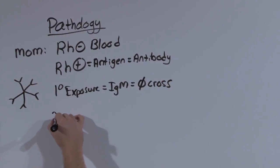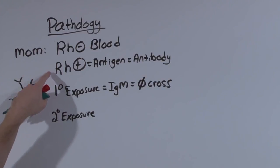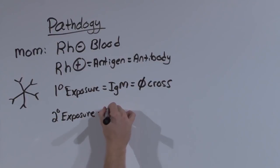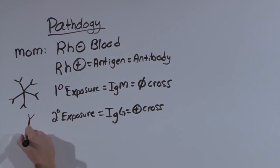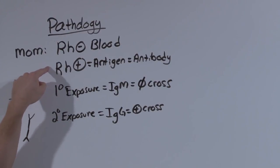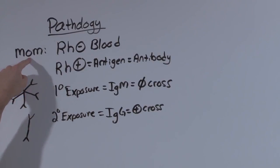The secondary exposure, when mom is already primed against the Rh positive antigen, will be IgG. IgG is smaller and can cross the placenta. So recognize that on first exposure, that is mom's first Rh positive baby, that baby is going to do fine. But that baby is going to prime mom to attack future Rh positive babies.